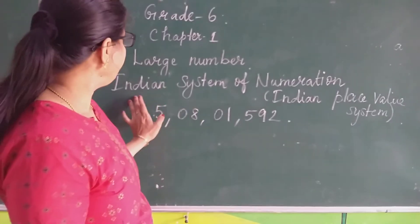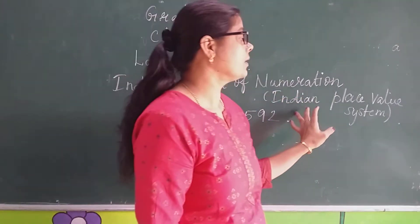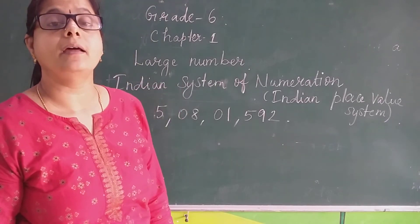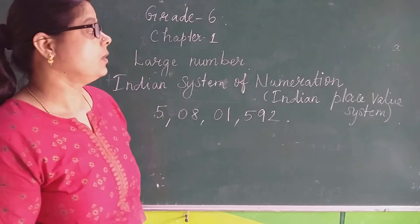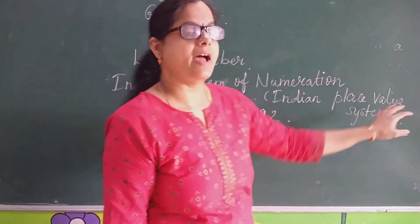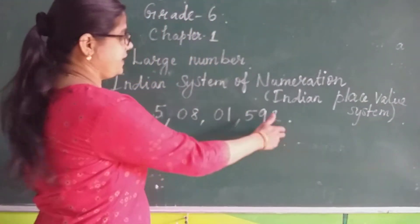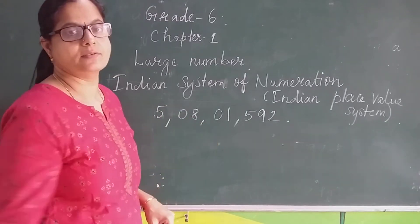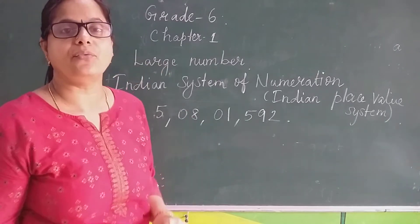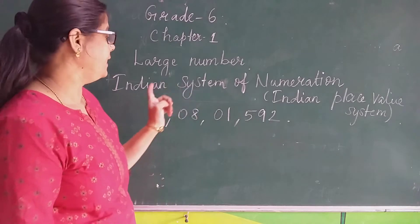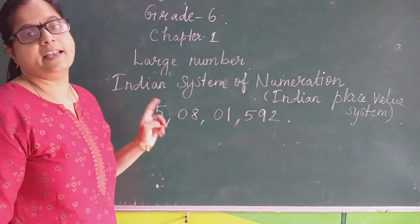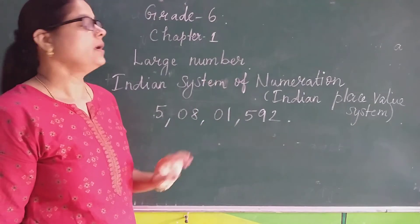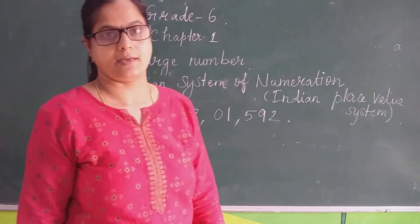This Indian system of numeration, or Indian place value system — you may know the place value system, you may have read it in fifth standard. So we can read or write numbers using this place value system. There are two types of place value system: one is Indian and the other is international. First we will see about the Indian system of numeration, or Indian place value system.